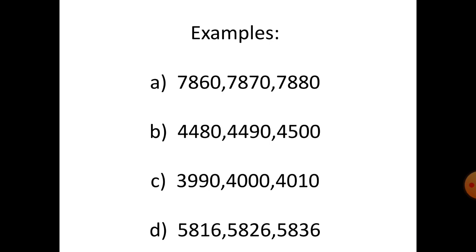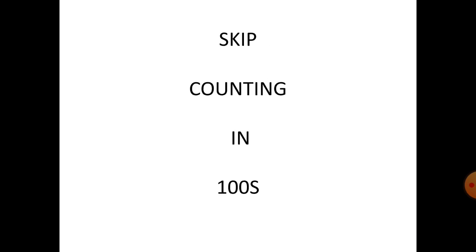Three thousand nine hundred and ninety plus ten: four thousand. Plus ten: four thousand and ten. Number D: five thousand eight hundred and sixteen — add ten — five thousand eight hundred and twenty-six, then five thousand eight hundred and thirty-six.